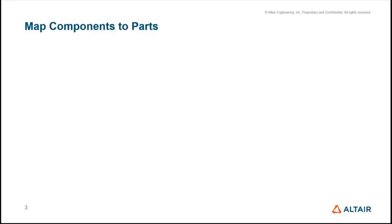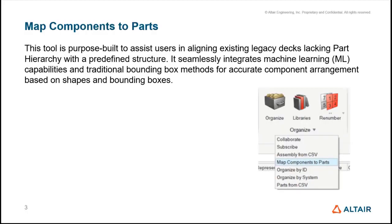First and foremost is Map Components to Part. This is a new, purpose-built tool that allows you to align existing legacy decks which have components only and no parts, to a part hierarchy with a predefined structure. It uses the Shape AI algorithm — the machine learning algorithm — and also the traditional bounding box method to accurately predict which component belongs to which part, and then arranges that component into that particular part.